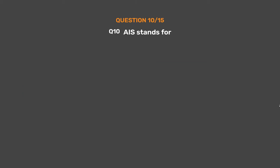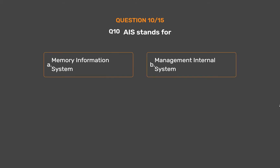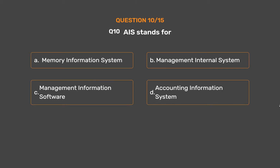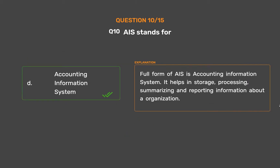Question No. 10. AIS stands for. Option A: Memory Information System. Option B: Management Internal System. Option C: Management Information Software. Option D: Accounting Information System. The correct answer is Option D — Accounting Information System. The full form of AIS is Accounting Information System.